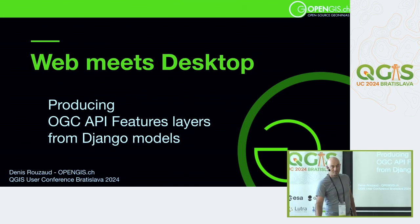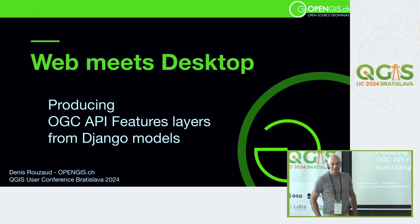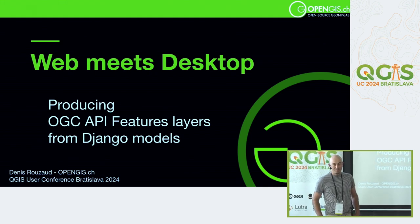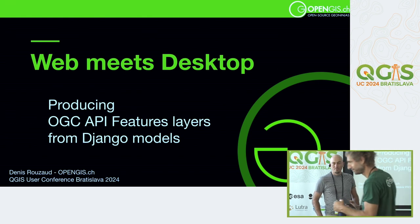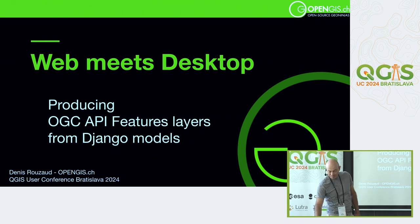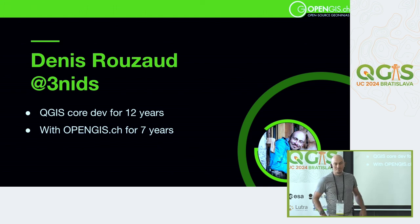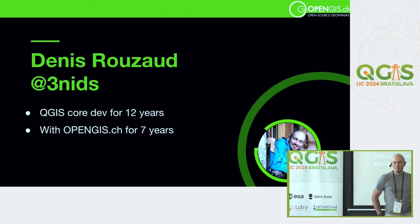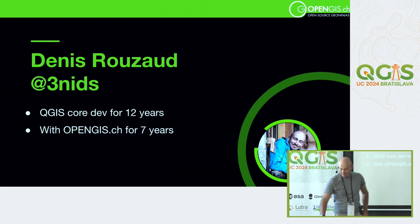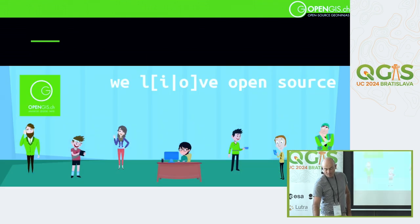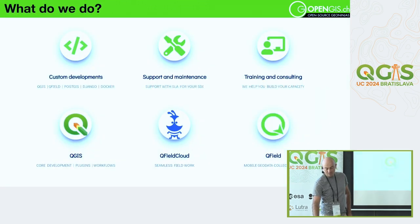Hi, I'm going to talk about web meets text desktop: producing OGC API Features layers from Django. My name is Denny Ruso, my username is 'vingt' — that's a French joke because my name is Denny. I'm a QGIS core developer for about 12 years and I'm with OPENGIS for seven years. We're a company dedicated to open source, located in Switzerland, and we're the developers and creators of QField and QField Cloud.